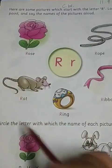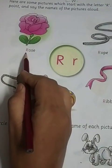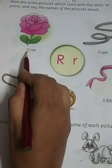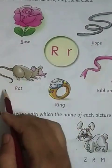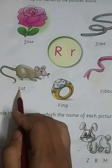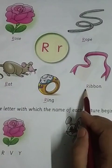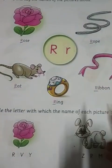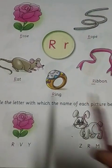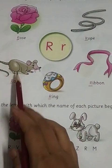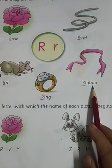Each picture begins with letter R. R for Rose. R for Rope. R for Rat. R for Ring. And R for Ribbon.